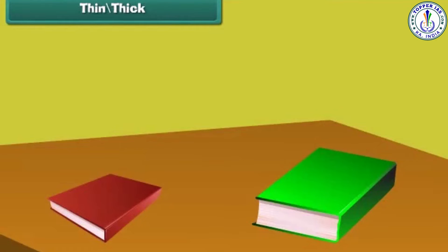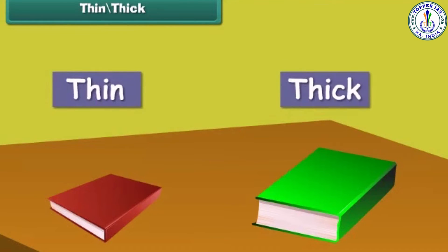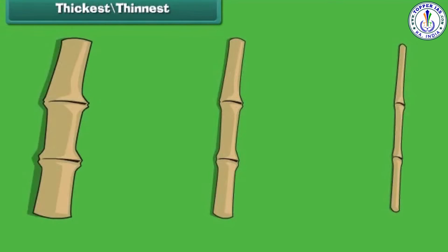Some objects are thin and some are thick. The picture on the left is thin and the picture on the right is thick. To compare the thickness of more than two objects we use the words 'thickest' and 'thinnest.' The first stick is the thickest and the third stick is the thinnest.